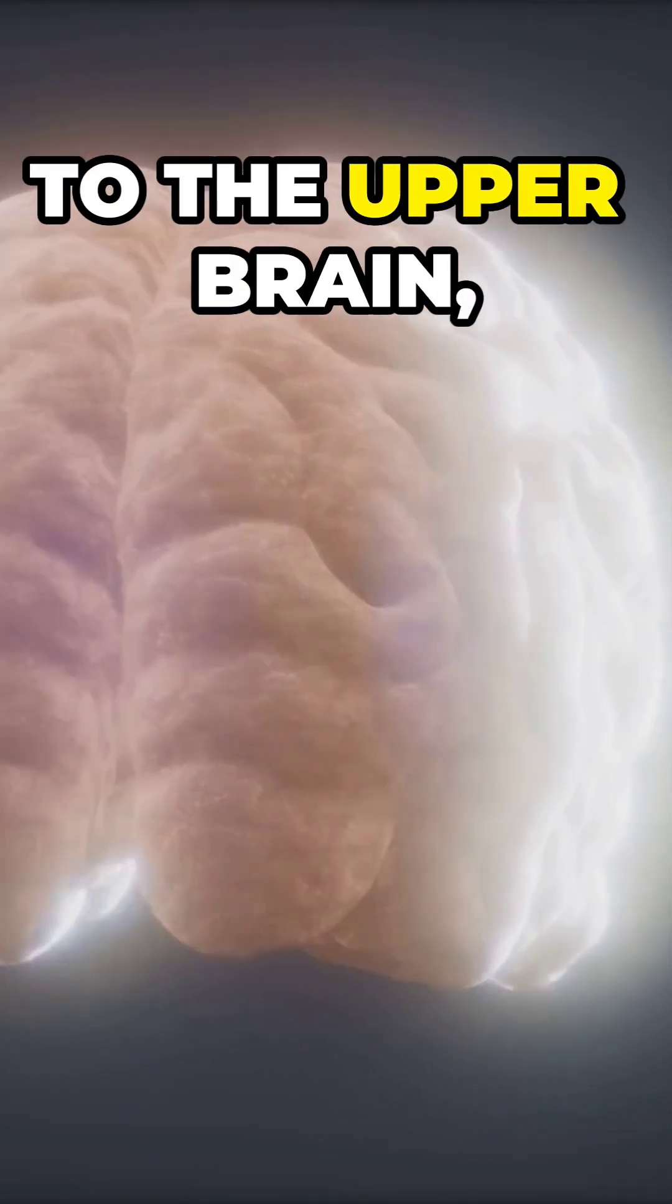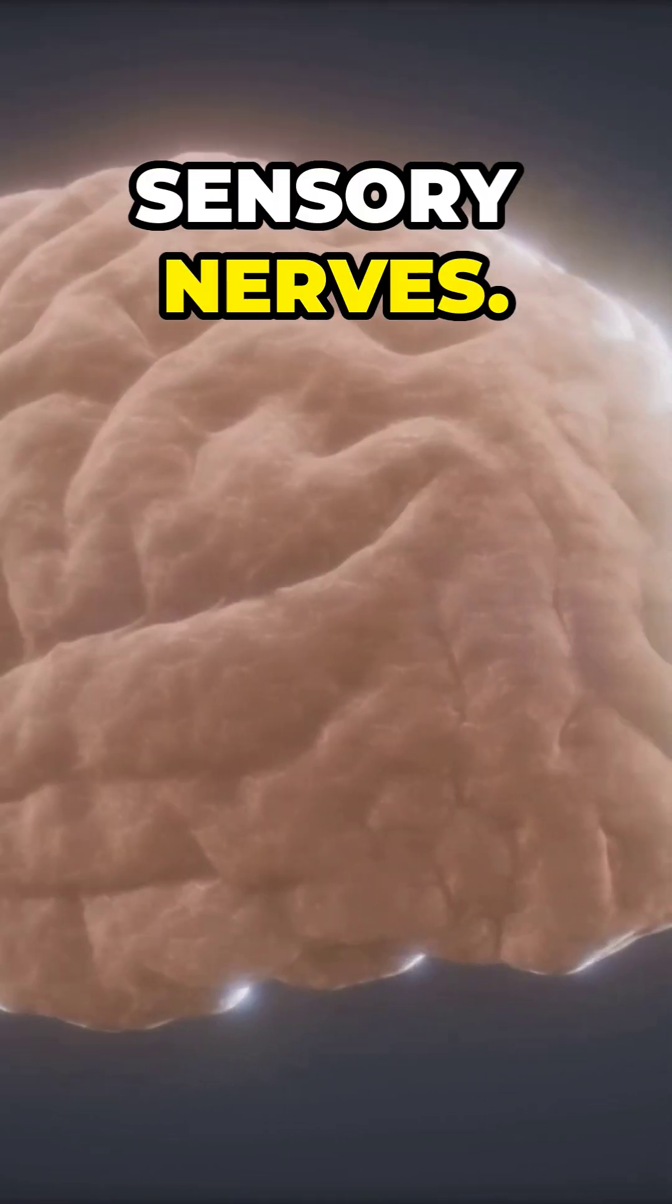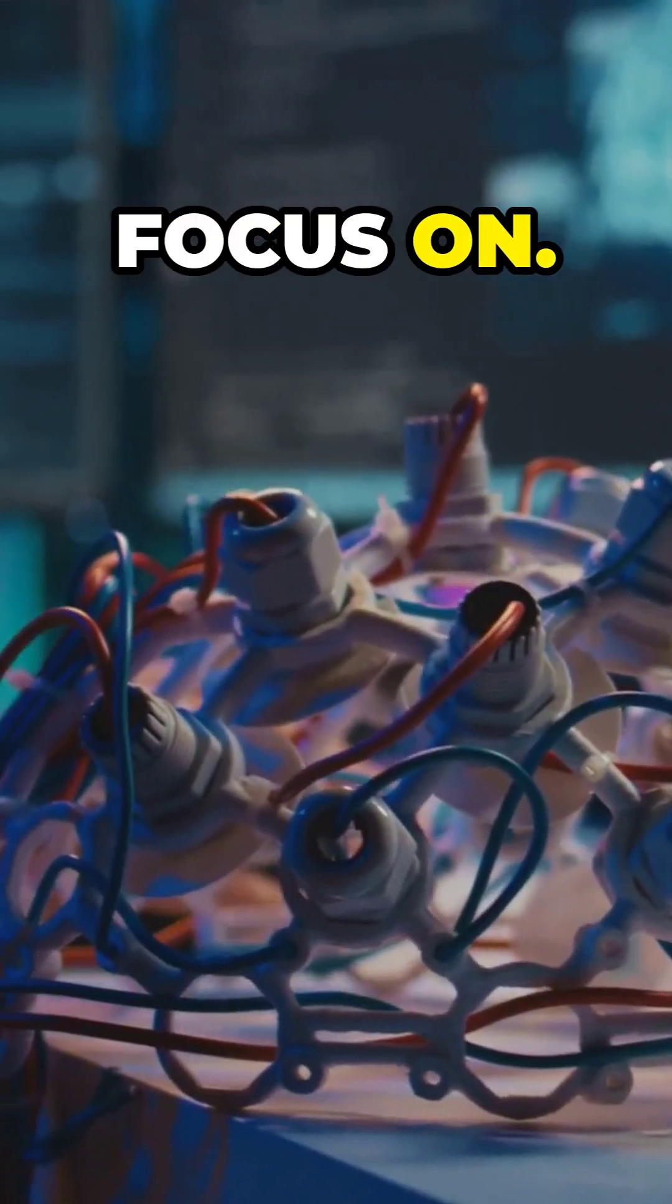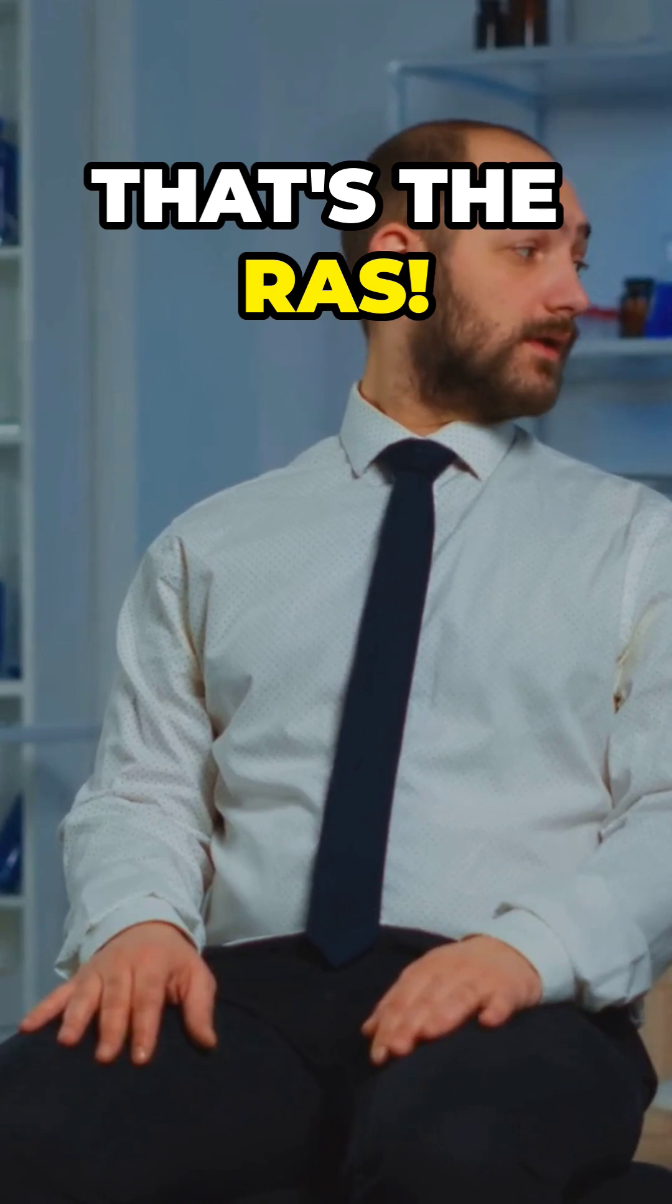The RAS has two parts. One connects to the upper brain, and the other to the cerebellum and sensory nerves. It's like a filter deciding what to focus on. Ever tune out loud noises? That's the RAS.